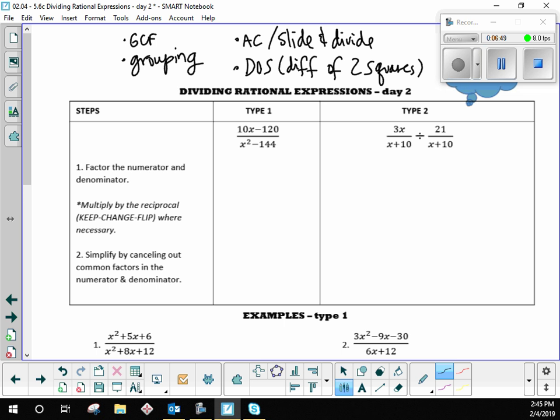So in type one, we are going to, step one, factor the numerator and denominator. And if we're just looking at the numerator, which of those methods do you think applies to 10x minus 120? Which of those methods here do you think applies to 10x minus 120? GCF. Another option is difference of two squares. Let's talk about how you can decide which one is which.